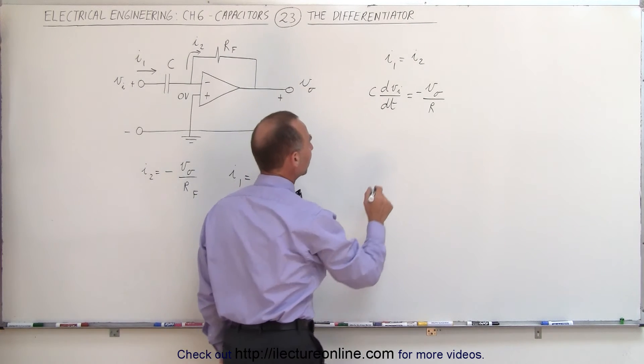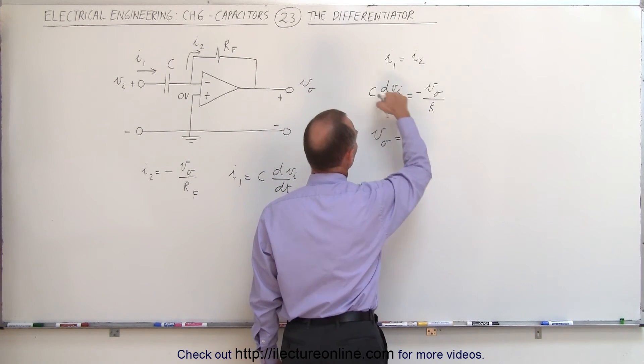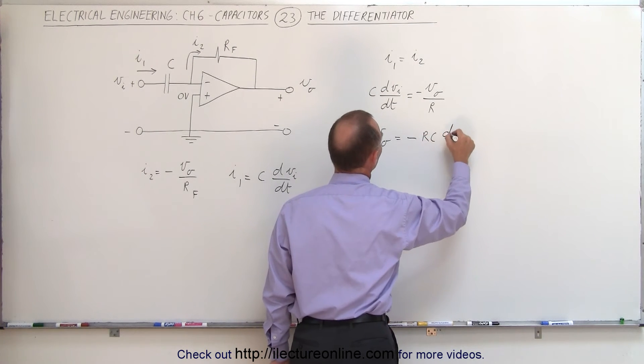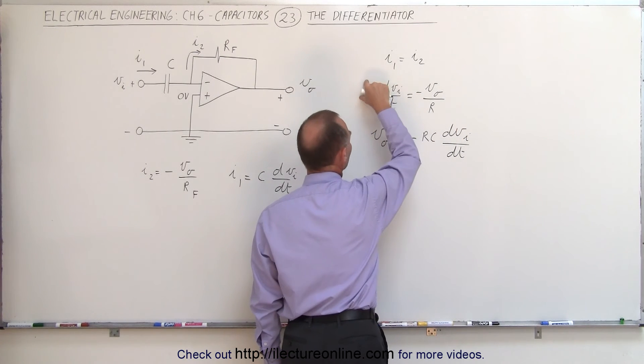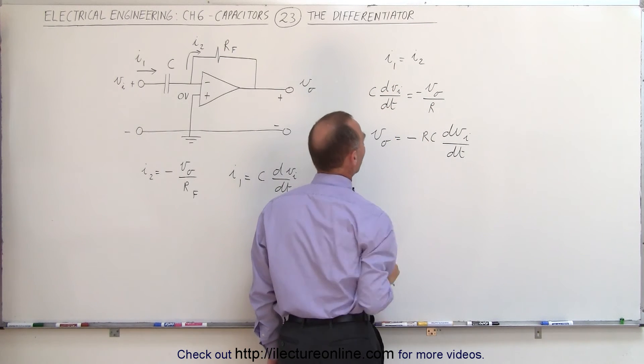Now, when we solve that equation for V sub O, we can say that V sub O is equal to, bringing this across, that becomes a minus RC times dvi dt. All we did is wrote the R over on this side, and bring the negative sign across, and turn the equation around.